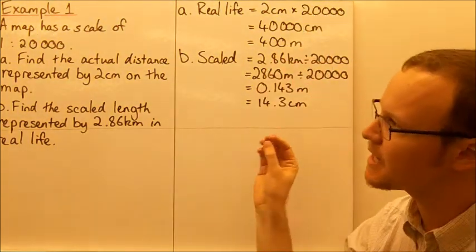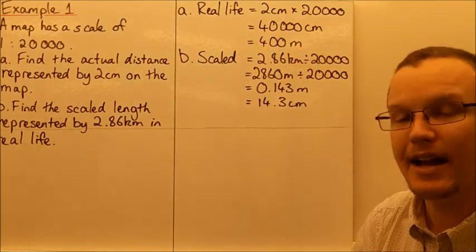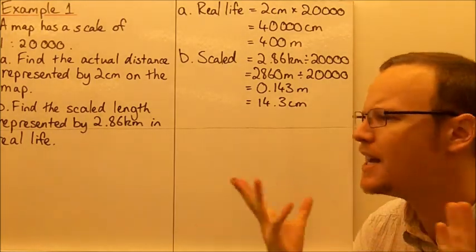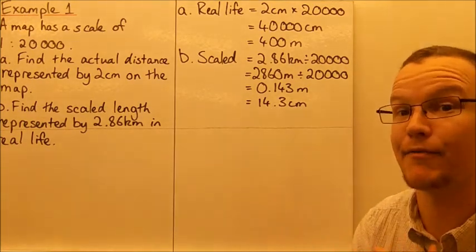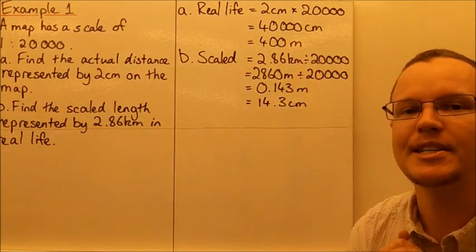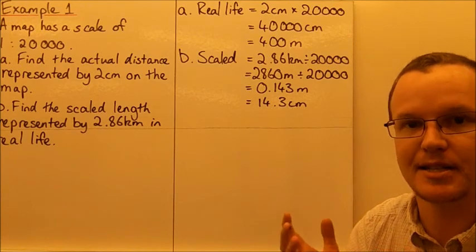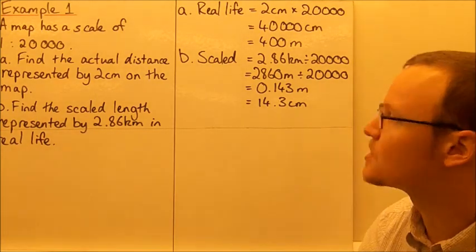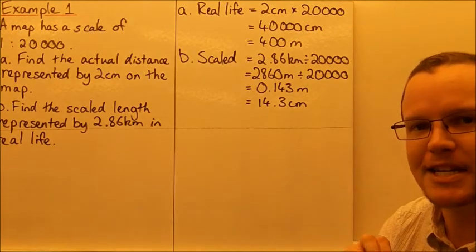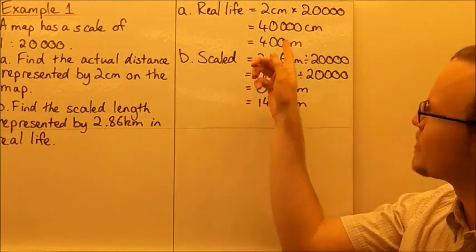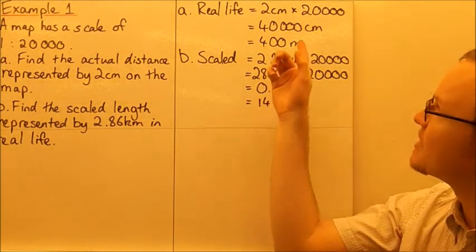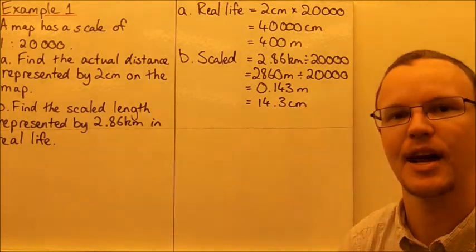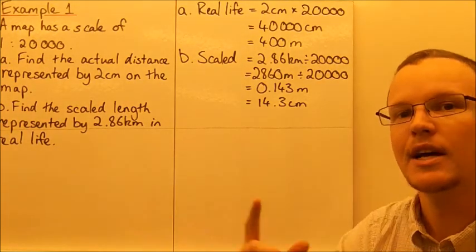We need to keep the same units, but we can now convert to an easier unit. 40,000 centimetres is difficult to think about, but 400 metres is much easier. Dividing by 100 — since there are 100 centimetres in one metre — gives us 400 metres, which is approximately the distance around a single loop of a running track.